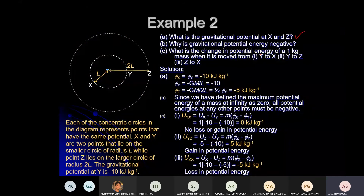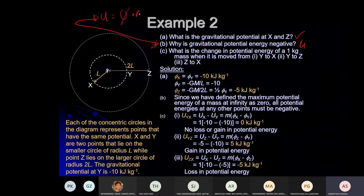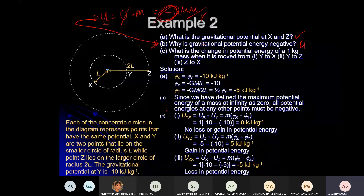Next — very important question: why is gravitational potential energy negative? They are talking about U, which is φ × m = –GMm/r. Why is gravitational potential negative? This is a three-mark question which we already discussed.